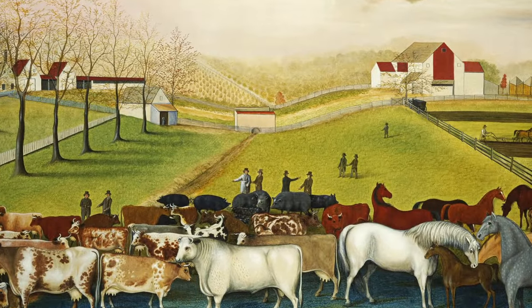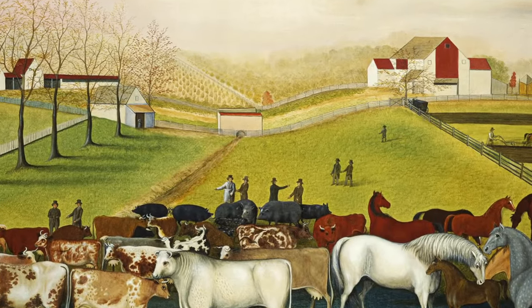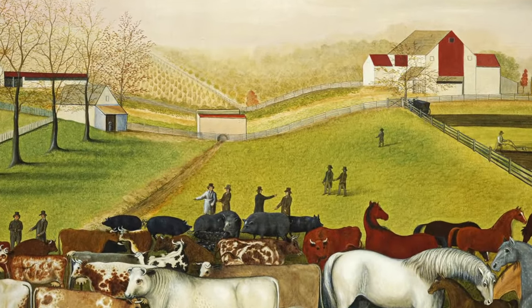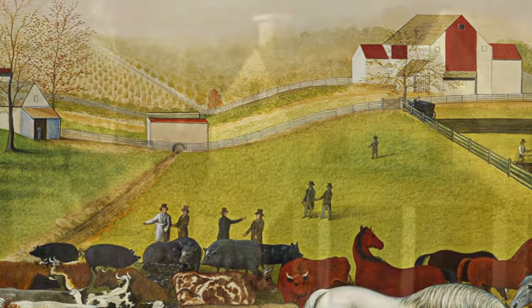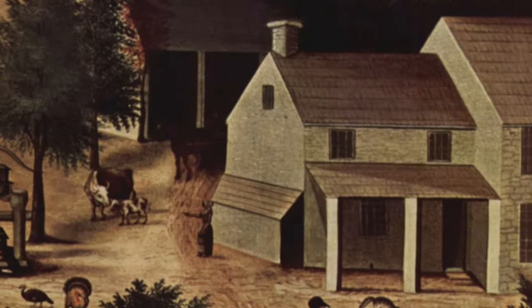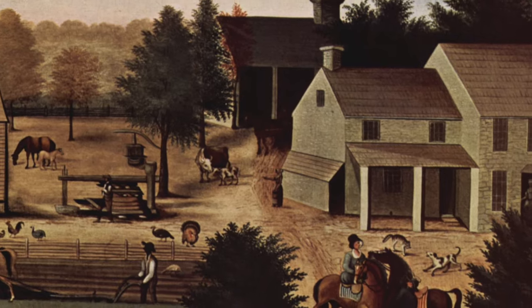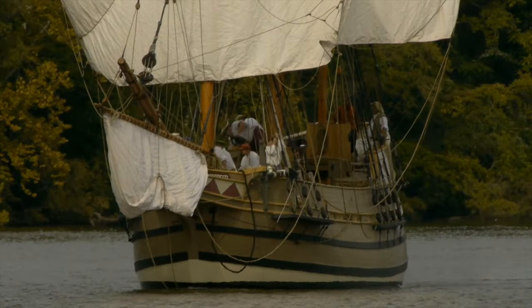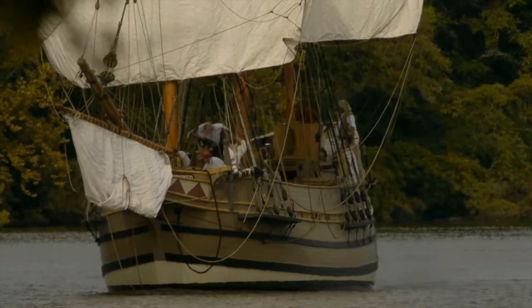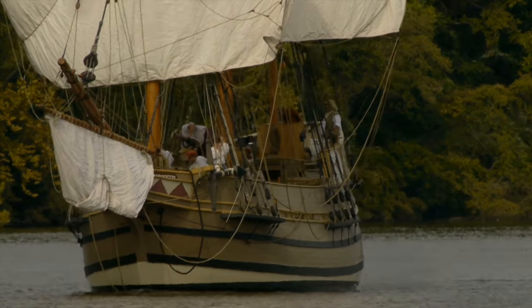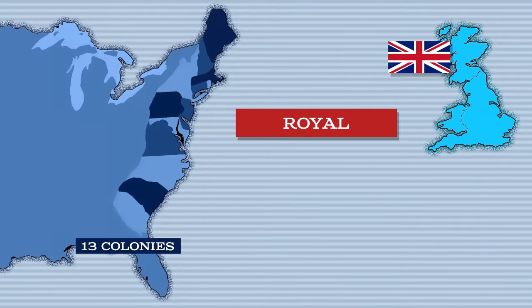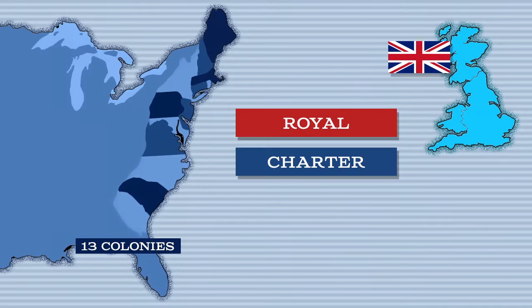During the time period from 1750 through the early 1760s, before the American Revolution, and before the 13 colonies came together to form the United States, each colony's government was formed according to one of three different legal models: royal, charter, and proprietary colonies.